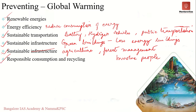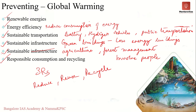Finally, responsible consumption and recycling can go a long way. Following the three R's — reduce, reuse, and recycle — can have great effects in combating global warming and climate change. This was a brief introduction to climate change and global warming: their causes, effects, and how they can be prevented.